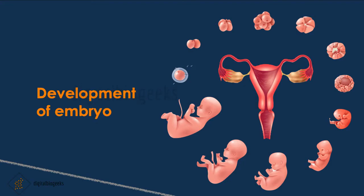Now let's learn about the development of the embryo in human beings. Fertilization happens in the oviduct — the sperm and ovum fuse together there. The zygote then travels down the oviduct and divides repeatedly to form a ball of cells. These cells develop into tissues and then into organs; this developing structure is called an embryo. The embryo gets embedded in the wall of the uterus and further develops to form hands, a head, and legs. The stage of an embryo where we can identify body parts is called the fetus. When the development of the fetus is complete, the mother gives birth to the baby.